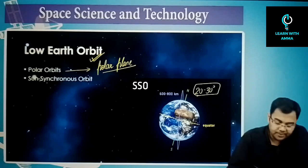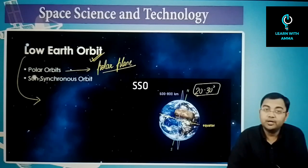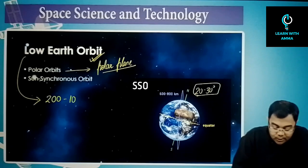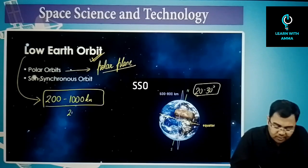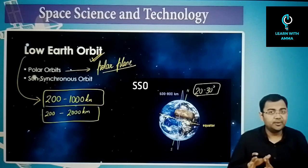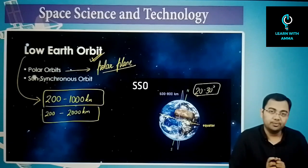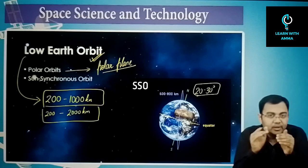Most polar orbits lie in the low earth orbit range of 200 to 1000 kilometers, though it can extend up to 2000 kilometers. In general, anything between 200 and 2000 kilometers can be called a low earth orbit, but most polar orbits are below 1000 kilometers.